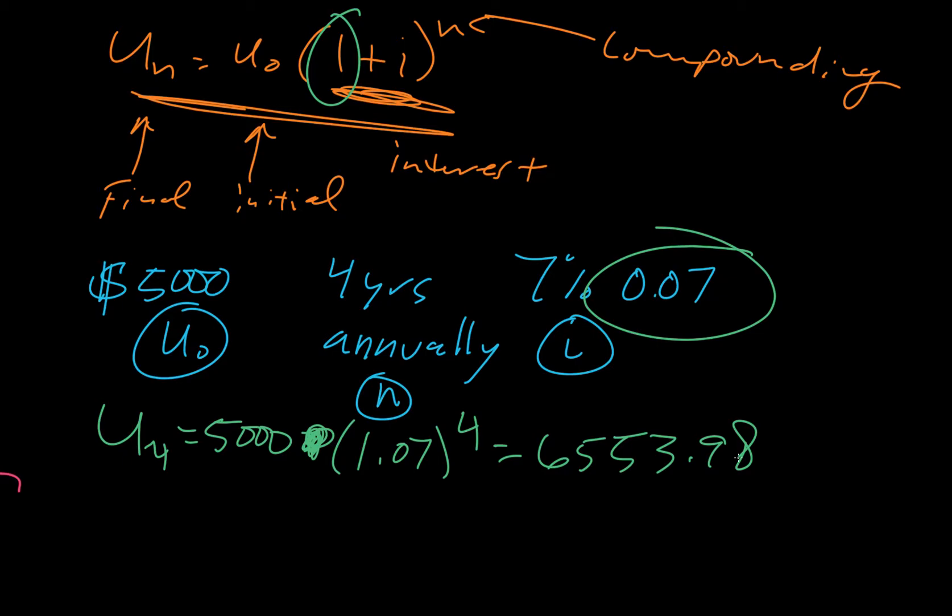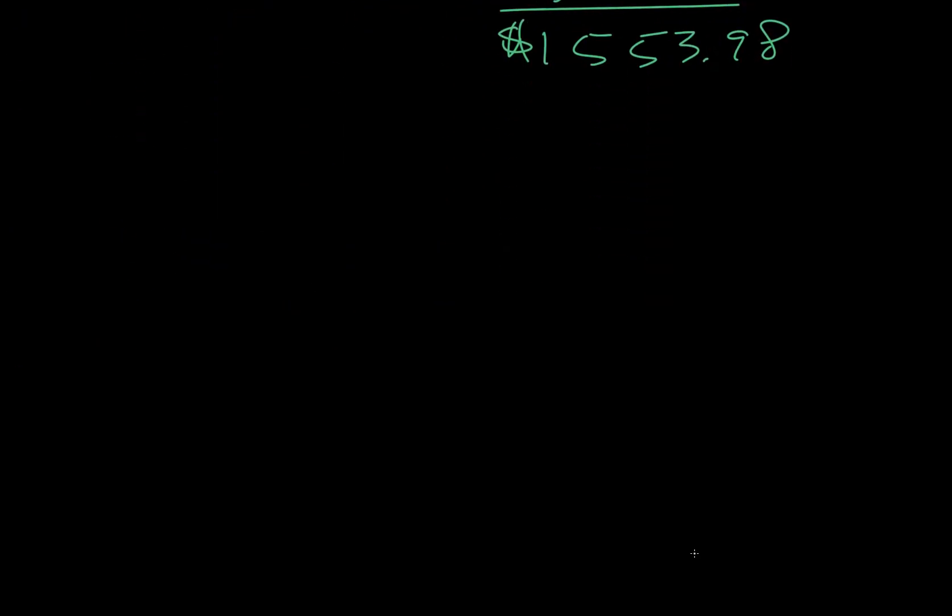So that's the total amount that would be in the account. And that's what the first part asks for. And then the next part asks how much interest was earned. And so we want to just subtract 5,000 from that. You can go to your calculator to do that if you want. But that is the amount of money we actually earned in that 4-year period. Okay.